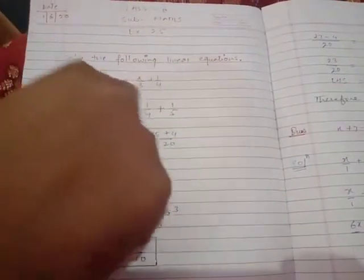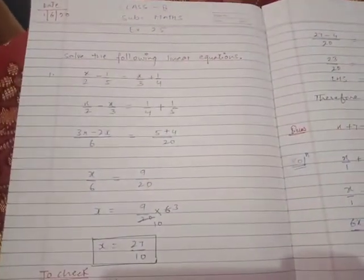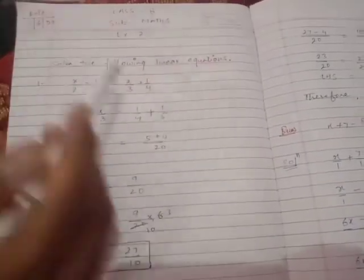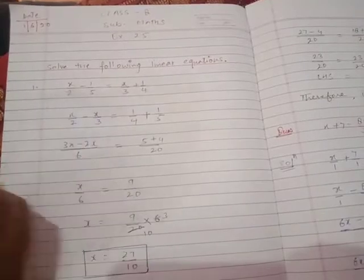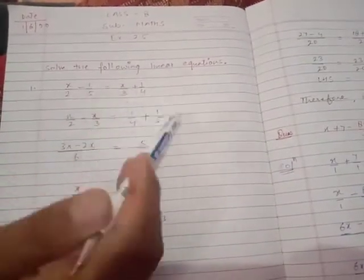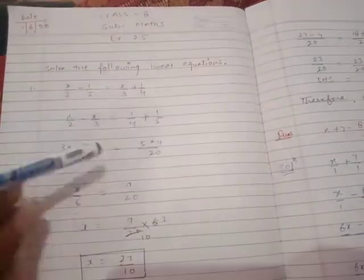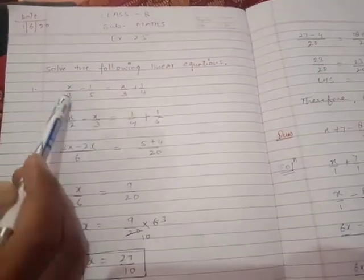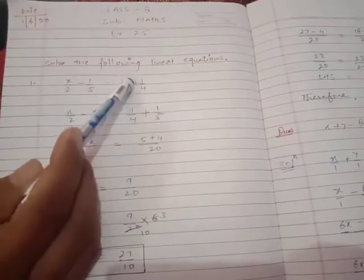First we will transpose the variable, we are going to separate, and the constant is going to go to the left side. Then x/2 - 1/5 = x/3 + 1/4. Now x/3 will come to the left side and -1/5 will go to the right side.